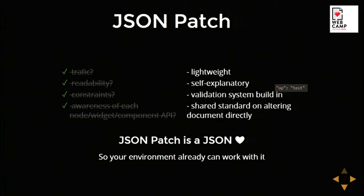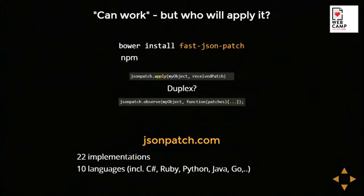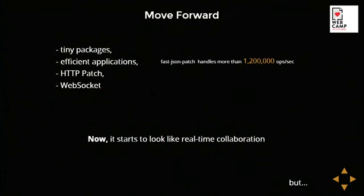A cool thing about JSON patch is that it is itself JSON. So if your environment supports JSON — which it probably does — it can also work with JSON patch. You can go to npm and install, for example, the fast-json-patch library, which we are trying to make as fast as possible. You can attach it to your object and apply patches. Our fast-json-patch handles more than a million operations per second on a regular developer machine. It fits really well with HTTP or WebSockets when you can push changes from the server, and plays nice with the HTTP PATCH method when you can alter an already-fetched document.